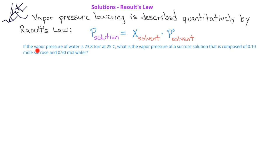If the vapor pressure of water is 23.8 torr at 25 degrees Celsius, what is the vapor pressure of a sucrose solution at the same temperature if the solution is composed of 0.10 moles of sucrose and 0.90 moles of water?